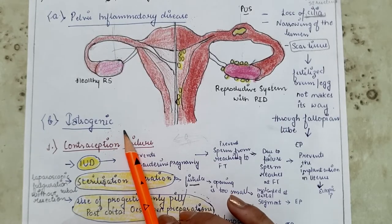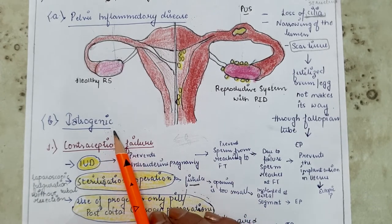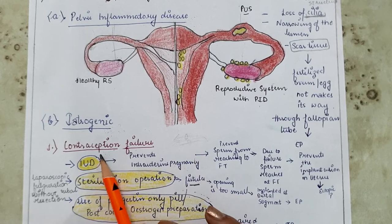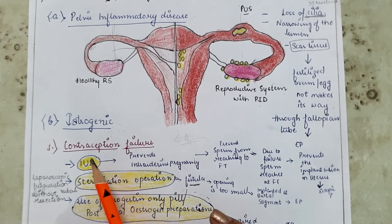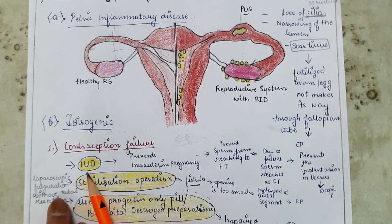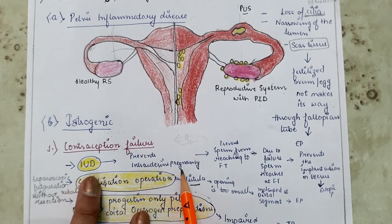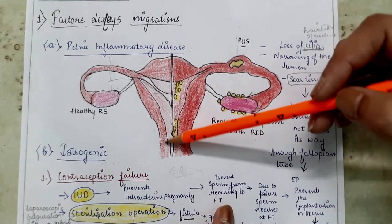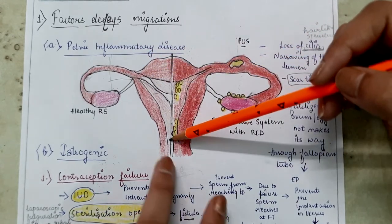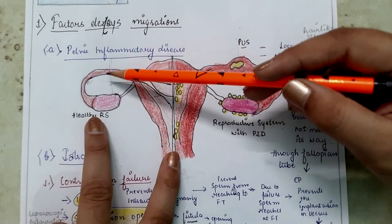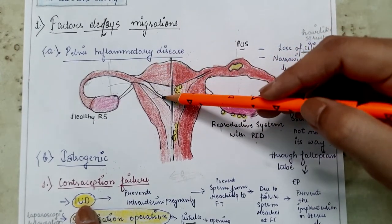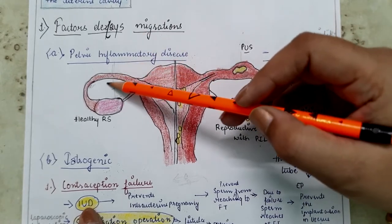The next factor is iatrogenic — tubal pregnancy due to medical procedures. Contraception failure: if pregnancy occurs while using an intrauterine device (IUD), the IUD prevents intrauterine implantation, so the fertilized ovum implants inside the fallopian tubes instead.